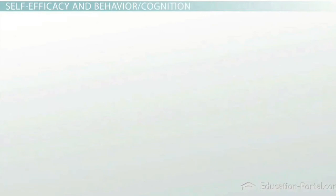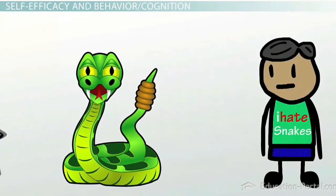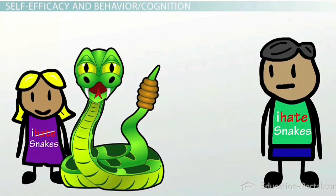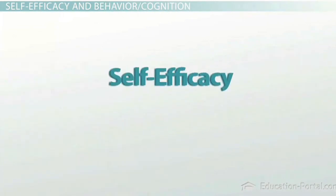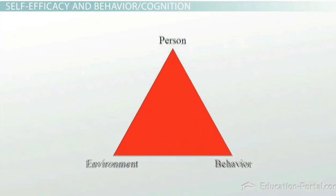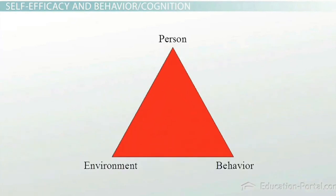Despite how many times a person observes a behavior, they will only engage in the behavior if they believe they can be successful. This is termed a person's self-efficacy, or their belief in their ability to produce desired results by their own actions. As you recall, self-efficacy was a contributor in the triadic reciprocity model discussed earlier.